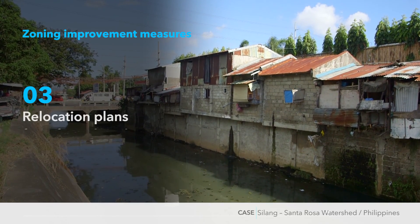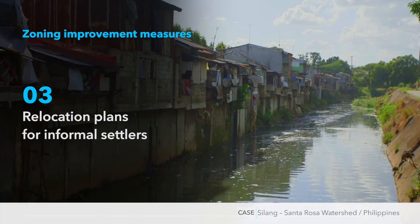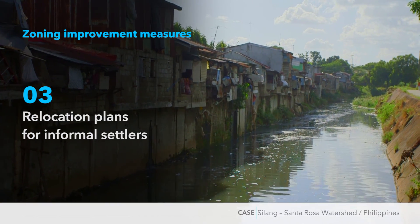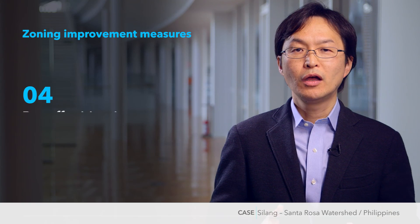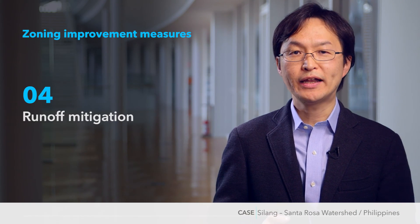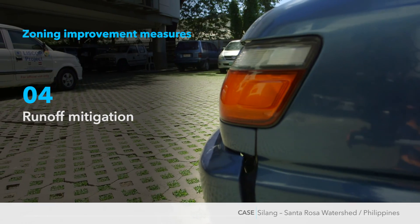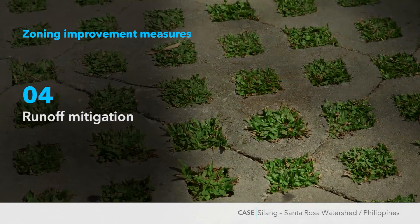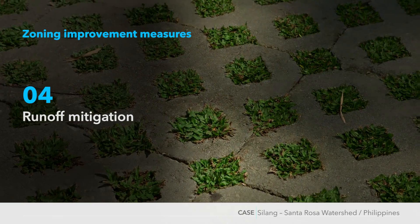Three: relocation plans for informal settlers who reside in flood-prone areas are devised. Four: where forest or agricultural lands are converted to residential, industrial, or commercial areas, runoff mitigation measures such as water permeable pavement and vegetated roofs must be taken.